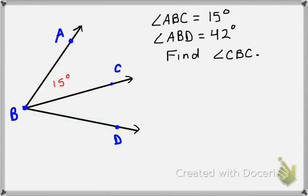They want us to find CBD, angle CBD, so I'll call it X. So if I do small part plus small part, I have 15 plus X equals big part, which was 42. Now I just need to solve by subtracting 15 from each side, and I get X equals 27.